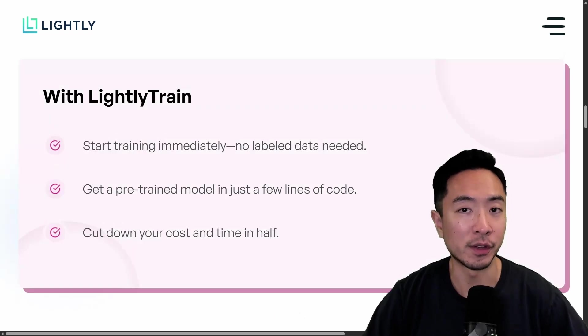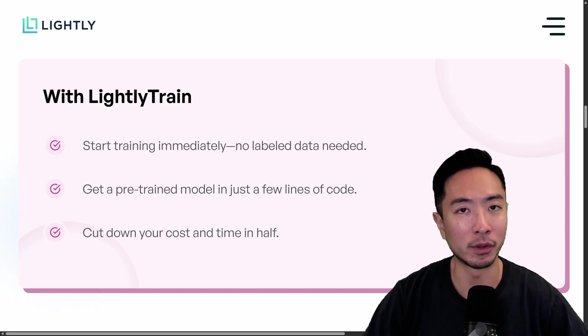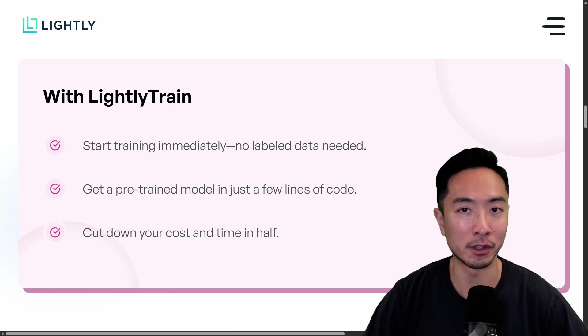So if you want to speed up development and deploy computer vision models, you should try out Lightly Train — you get to start training immediately with no labeled data, and you can use a pre-trained model in just a few lines of code.